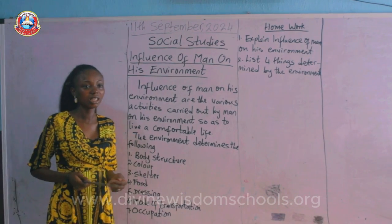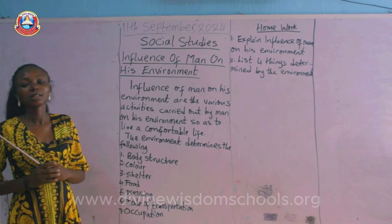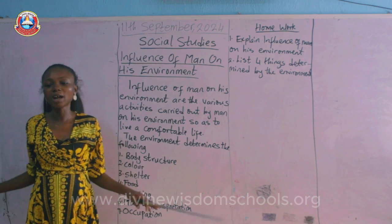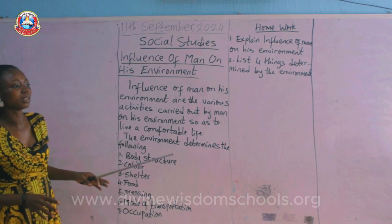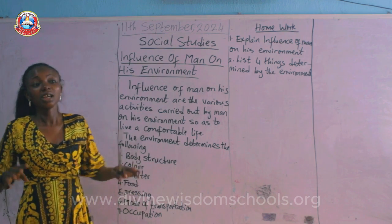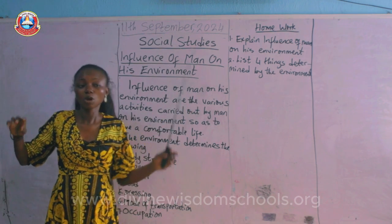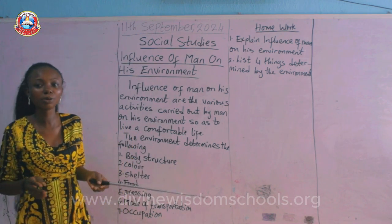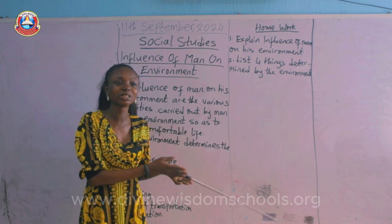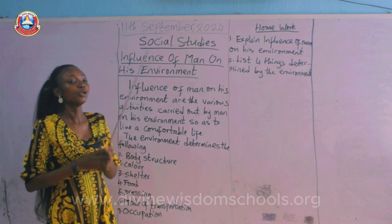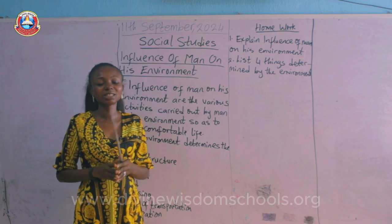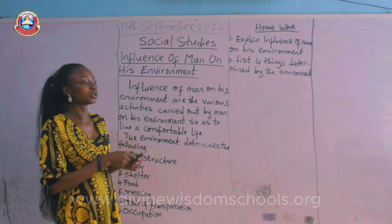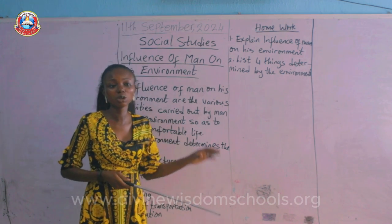Our environment means our immediate surrounding. When we say immediate surrounding, we are not talking about man-made things like your chairs, tables, houses, or things you see in school. The physical environment refers to those things created by God — the natural things around us.